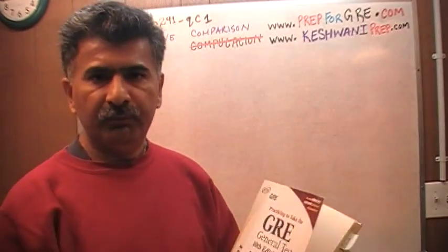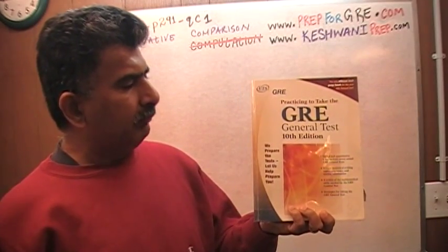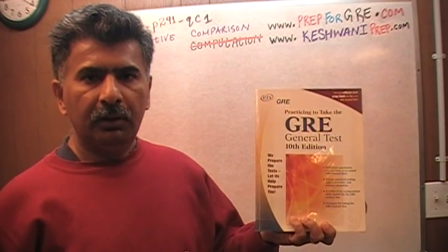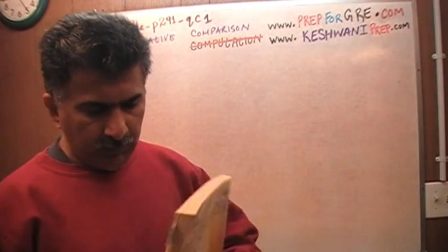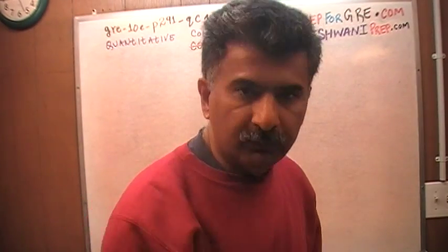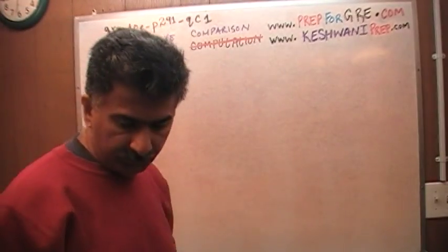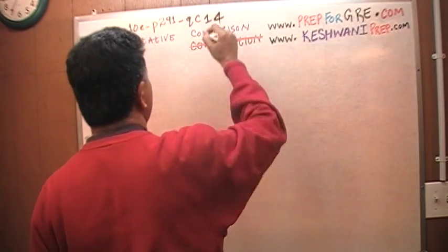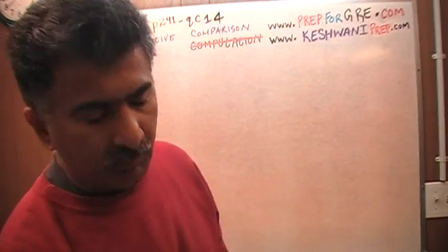I have been solving math problems for GRE out of this book here. Practicing to take the GRE general test, the 10th edition. If you do not own this book already, purchase one immediately. The problem that I am about to solve is the one you are going to find on page 291, quantitative comparison question, number 14. The penultimate one because there are only 15 altogether. This is the second to the last.